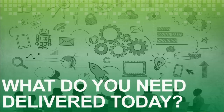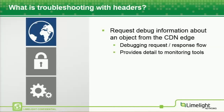And oftentimes customers need to know, is the CDN actually doing what I think I'm telling it to do, what I think it's configured to do, and what my origin is telling it to do? So we introduced some troubleshooting headers that our customers can use. These enable our customers to send a request to the CDN with some additional request headers that allow the CDN to send back some debug information about what it's doing.